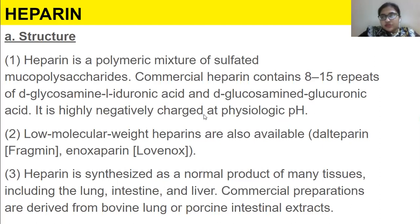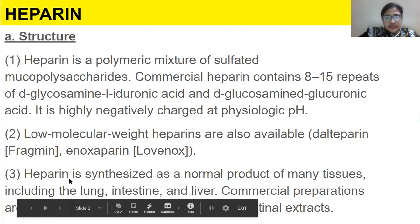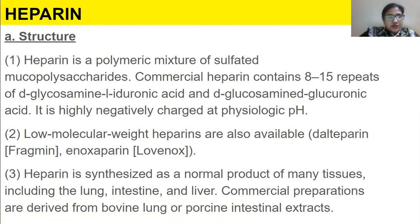Low molecular weight heparins are also available. Heparin is synthesized as a normal product of many tissues including the lung, intestine, and liver. Commercial preparations are derived from bovine lung — bovine is related to the cow — and porcine intestinal extracts — porcine is related to pigs.